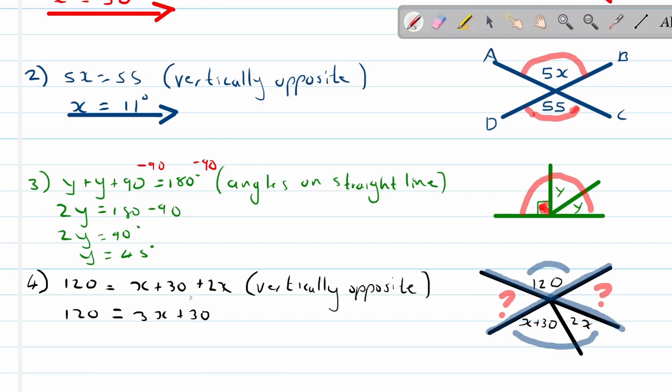Now we are taking the 30 across by subtracting it on both sides. So on the left hand side we have 120 minus 30. So that means we've got 90 on the left hand side. Right hand side we've got 3x. Now we are dividing by 3 on both sides. So x is equal to 90 divided by 3 and that is equal to 30.